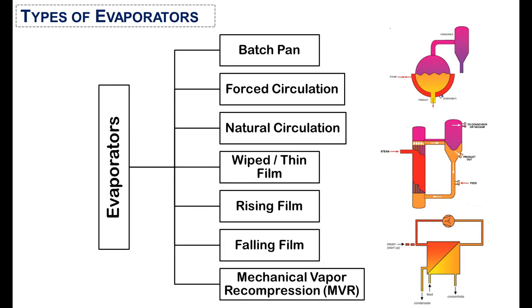There are mainly 7 types of evaporators which are widely used in process industry: batch pan evaporators, forced circulation evaporators, natural circulation evaporators, wiped and thin film evaporators, rising and falling film evaporators, and mechanical vapor recompression evaporators.